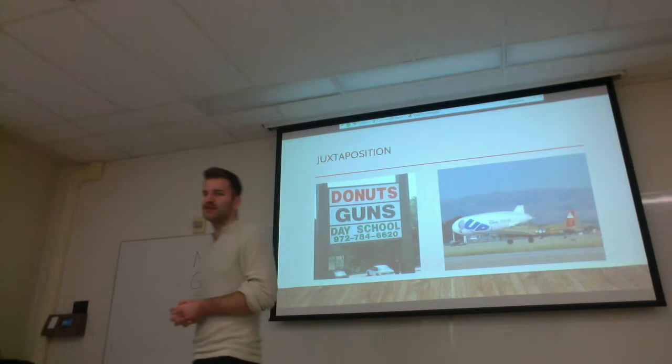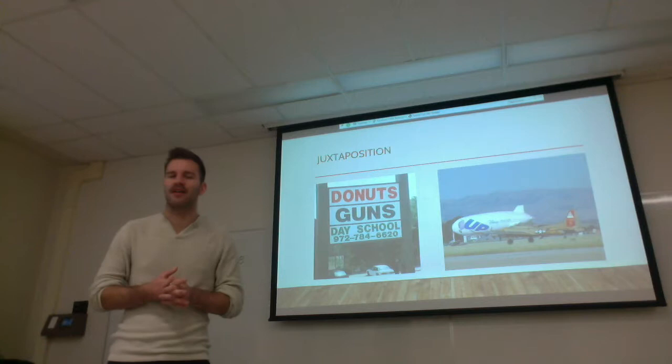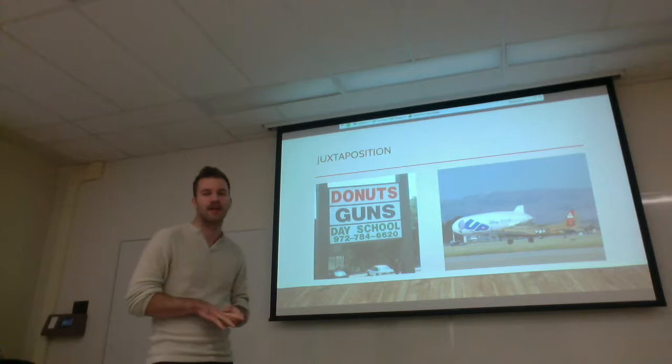So it sounds like you're all on the right track. Juxtaposition is when you put two dissimilar objects together in order to compare and contrast them, to highlight their similarities and differences. For example, the image of the airplanes — they are similar because they're both planes, but the difference is that one is a military plane and the other is a Disney plane, so completely different functions.